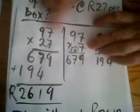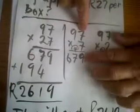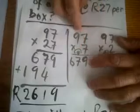You split it up: 97 times 7 and 97 times 2. Do your calculation. 7 times 7 is 49, the 9 comes down, the 4 goes up. Then 7 times 9 is 63, plus 4 will be 67.